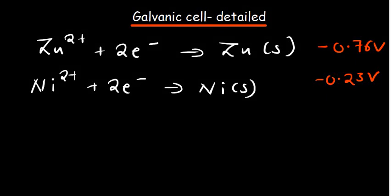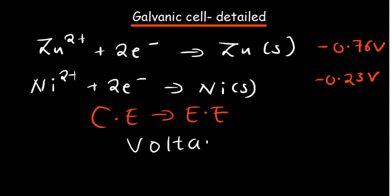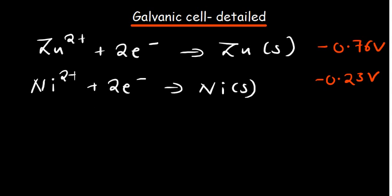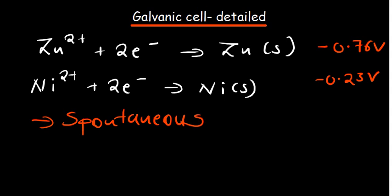In this video we're going to go over a galvanic cell. A galvanic cell involves conversions from chemical energy to electrical energy. In some textbooks a galvanic cell may be referred to as a voltaic cell, so whenever you see voltaic cell, know you're talking about a galvanic cell. In a galvanic cell we need to understand that it involves a spontaneous redox reaction, which means there's no need for us to supply any current — it happens on its own.